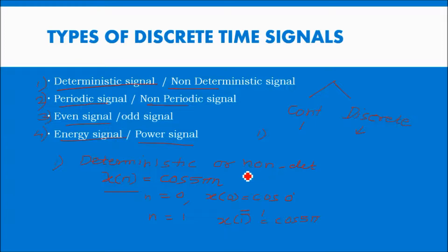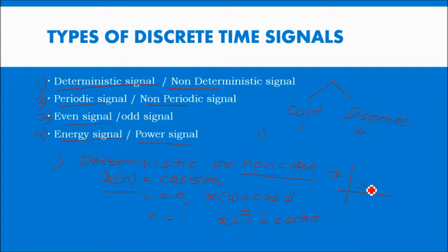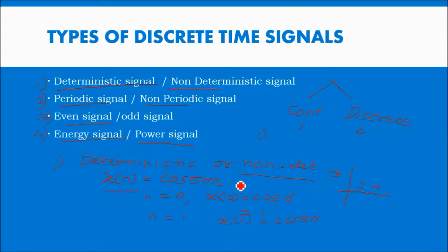Non-deterministic means it is impossible to calculate the value. For example, we cannot say that the share market at 9 o'clock will have a particular value — we cannot predict it. So that is called non-deterministic. Examples of deterministic signals are cosine or sine waves, or any signal defined by an equation.